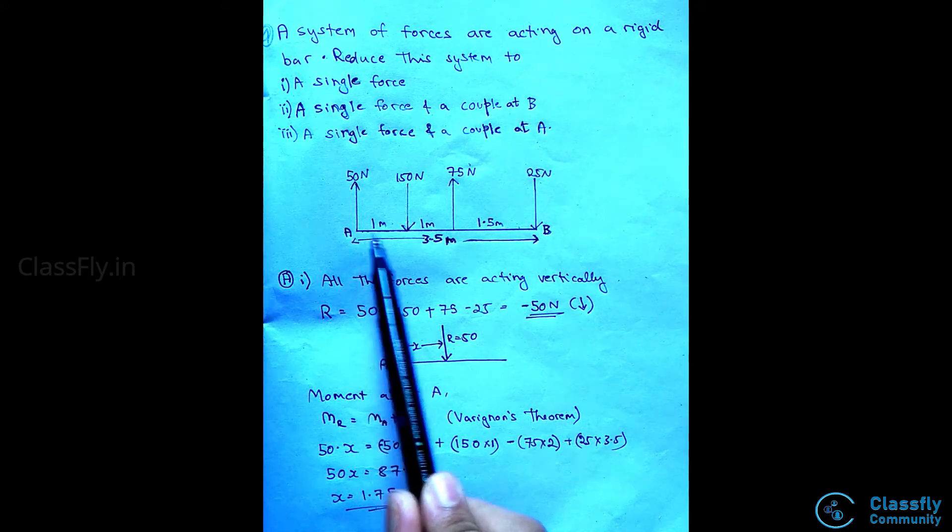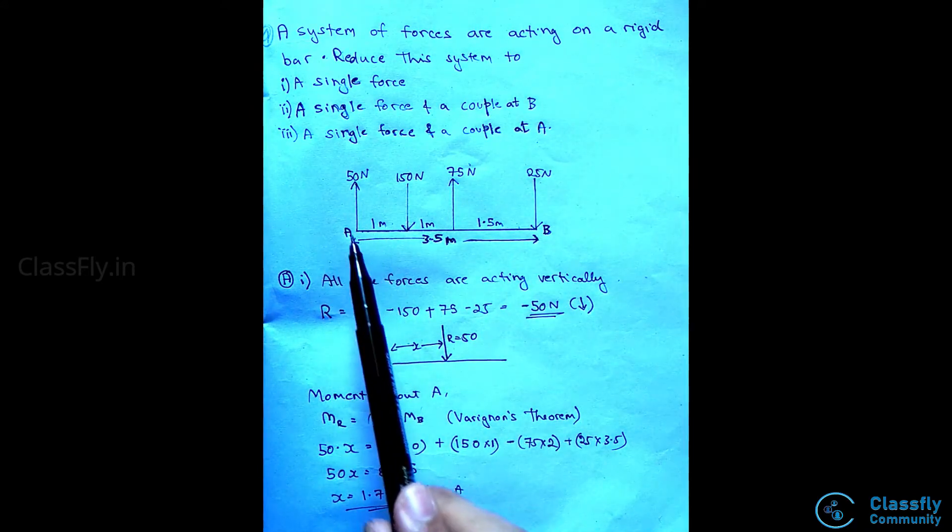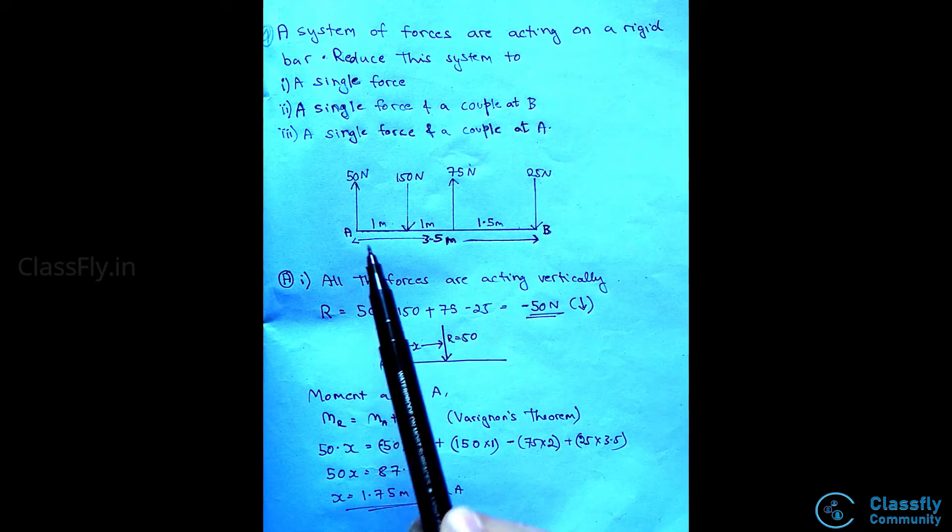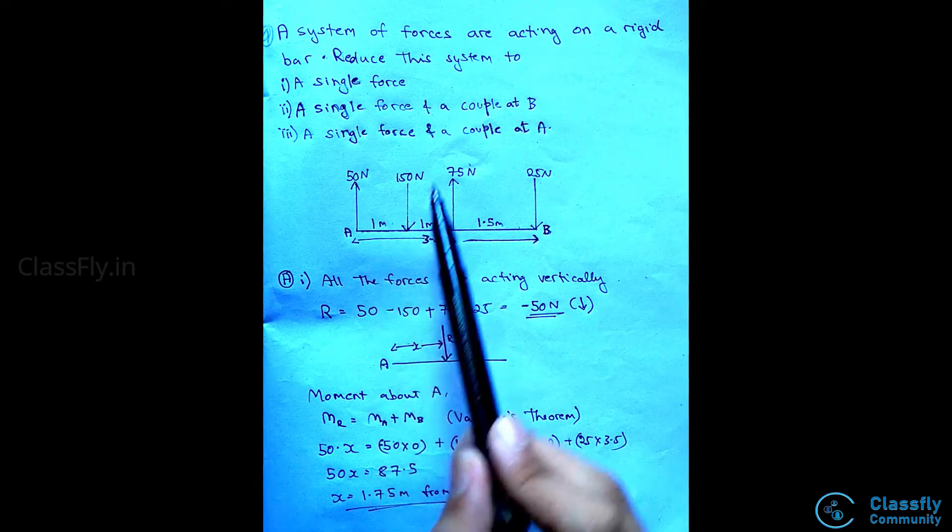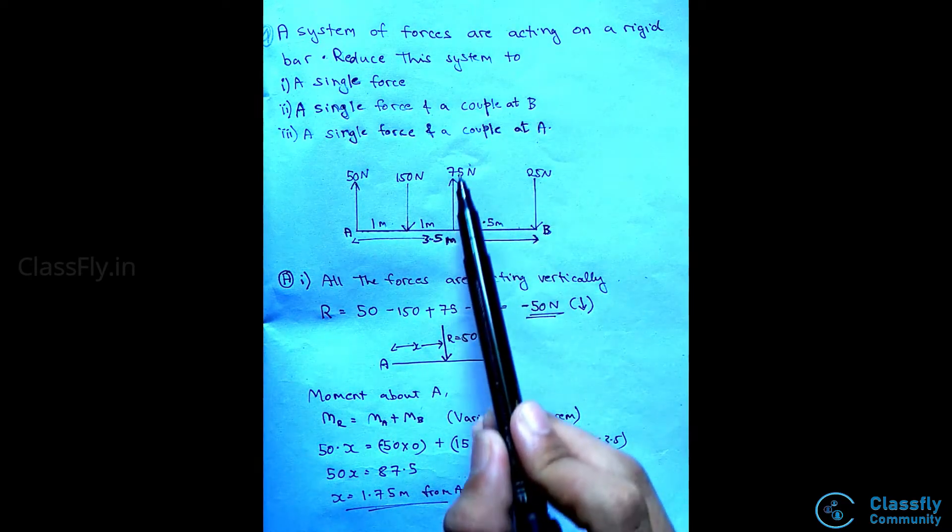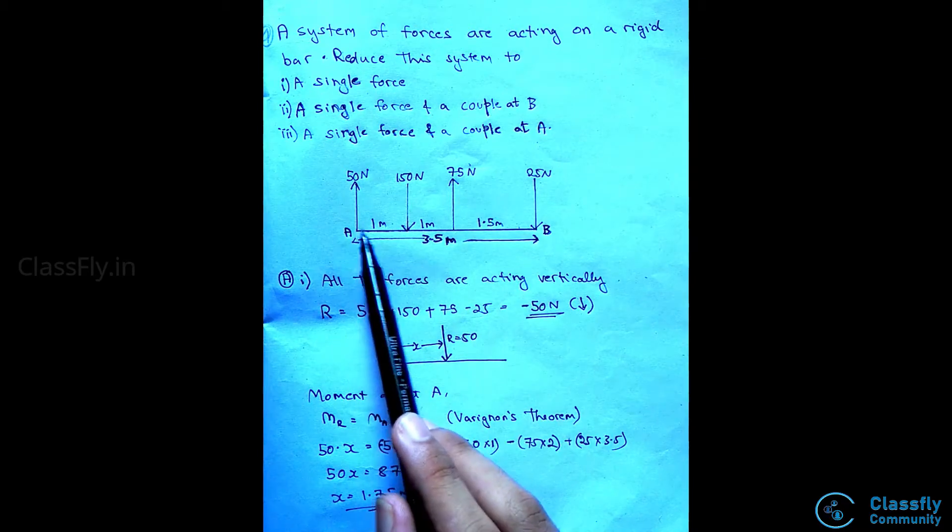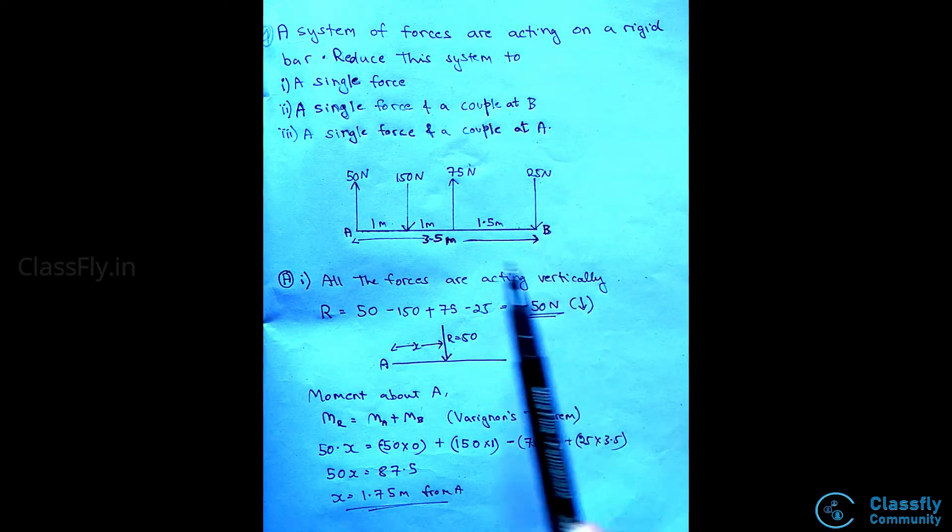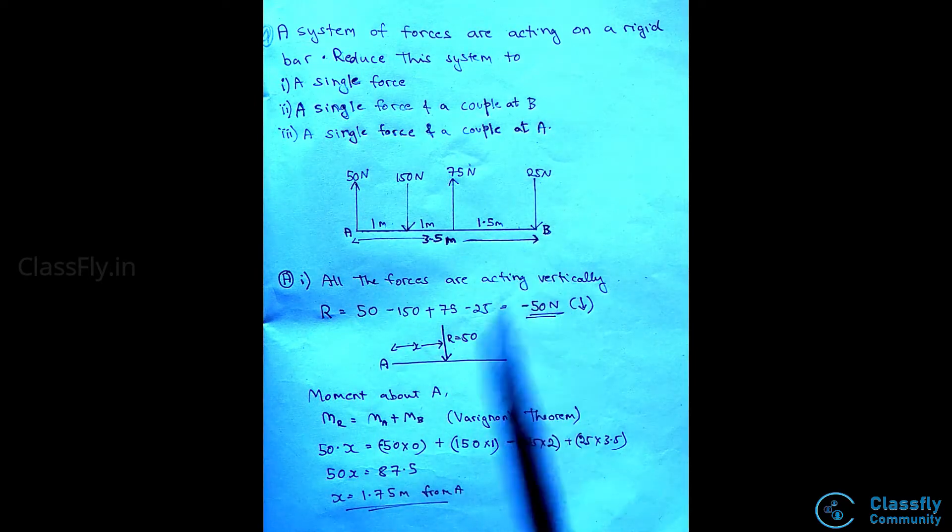You can see in the diagram that there are system of forces acting from A to B. A 50 Newton force at A, 150 Newton force 1 meter away from A, 75 Newton force 2 meters away from A, and 25 Newton force at B which is at a distance of 3.5 meters from A.